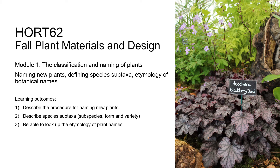In this module we're continuing to learn more about the classification and naming of plants. By the end of this unit you'll be able to outline the procedure for naming newly discovered naturally occurring plants, you'll be able to describe the difference between the species subtaxa, subspecies, form and variety, and you'll know how to look up the etymology of plant names.